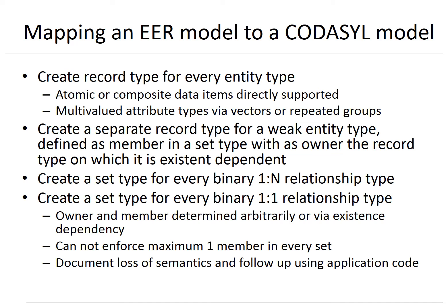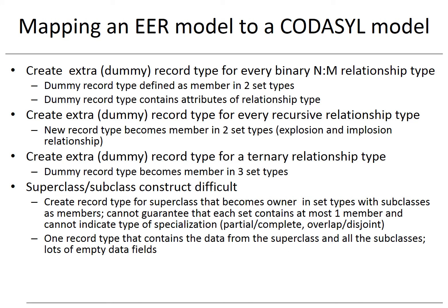Note that we are losing semantics here as we cannot enforce one member record in every set. Remember, binary many-to-many relationship types are not supported in the codicil model. Hence, we have to implement them by creating an extra dummy record type which is defined as member in two set types, whereby the owners are the record types corresponding to the entity types of the many-to-many relationship type. The dummy record type can then also contain the attribute types of the many-to-many relationship type. Recursive relationship types are also mapped using an extra dummy record type which then becomes a member in two set types, essentially modeling an explosion and implosion relationship.